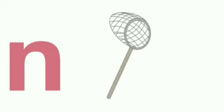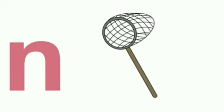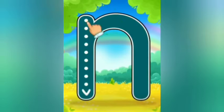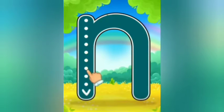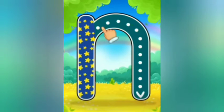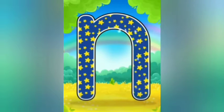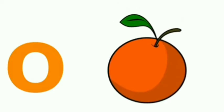Let's begin with small letter N. N is for net. Let's see the formation: make a standing line up to down, now make a round, and make again a standing line.